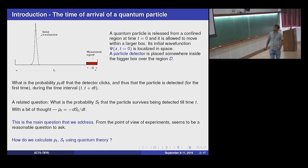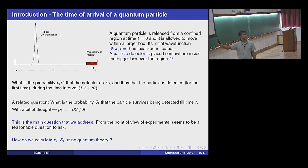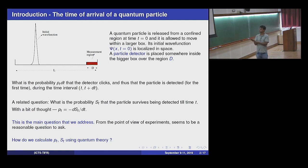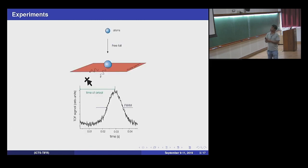A related question is: after I release the particle, what is the probability that I never detect the electron up to some time t? That's the survival probability — survival from being detected. This seems like a reasonable question from the point of view of experiments, and the question is: if I just use the principles of quantum mechanics, how do I answer it?